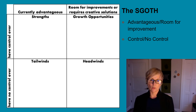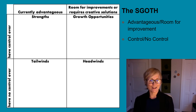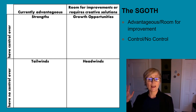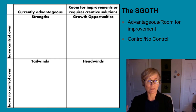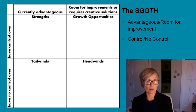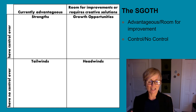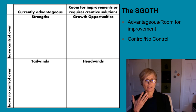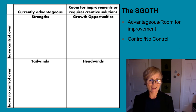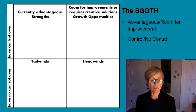The bottom two boxes are things that you don't have control over — those are your Tailwinds and Headwinds. If we think of tailwinds as some kind of help that comes at your back, much like a tailwind when you're running a race or sailing, a tailwind will push you towards your destination faster than if you had no wind at all.